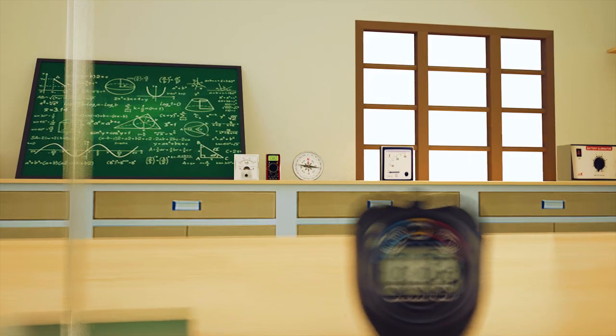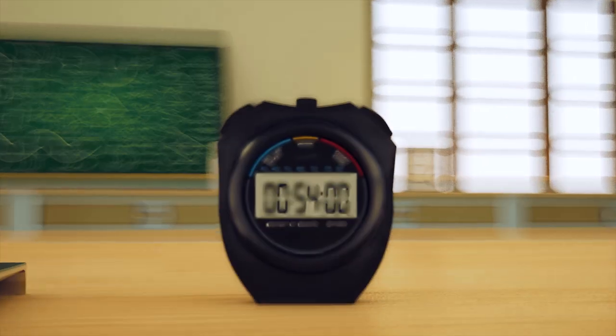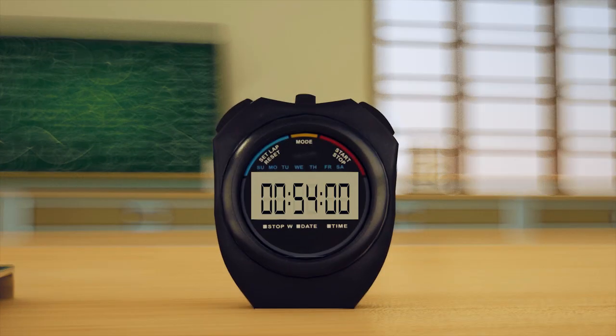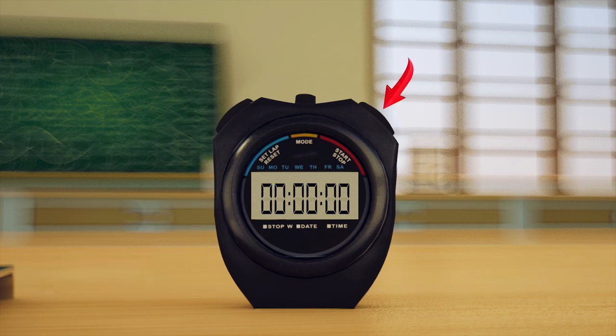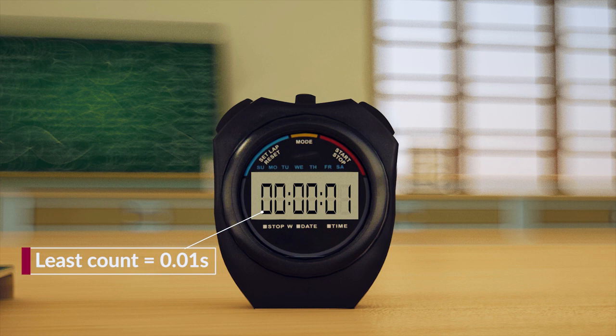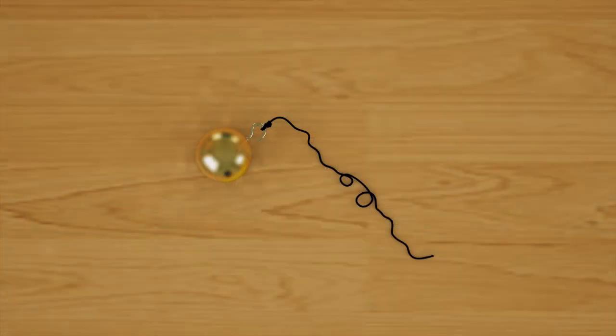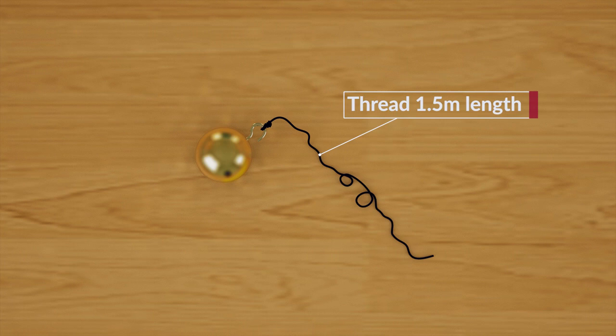Take a stopwatch and find its least count. The least count, or the minimum reading that can be taken from this stopwatch, is 0.01 second. Tie one end of a light inextensible thread of nearly 1.5 meters in length to a metallic pendulum bob of known radius.